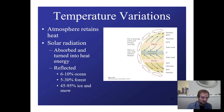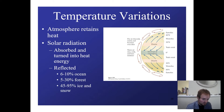The atmosphere is also very good at retaining heat — solar radiation from the sun is absorbed and turned into heat energy. Different parts of the Earth are better or worse at reflecting this heat. The ocean is best at absorbing solar radiation, reflecting only about 6–10%. Forests reflect 5–30%. Snow and ice reflect the most because they're white — the radiation just bounces back into space. Right now we're melting ice caps due to climate change, which creates more ocean area, which absorbs more solar radiation, which heats us up, which melts more ice — a positive feedback loop of heating.